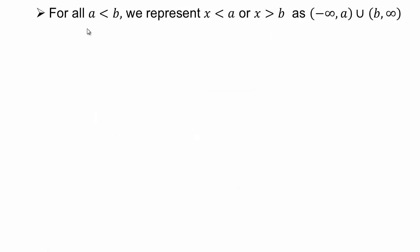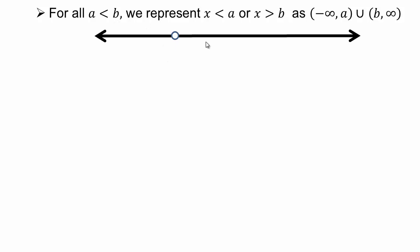For x less than a or x greater than b, we write it as negative infinity to a, union, b to infinity. The union symbol represents 'or' — meaning together, you can be either here or there. So everything to the left of a and everything to the right of b is included. For x less than or equal to a or x greater than or equal to b, a and b are now included, so we use square brackets at those endpoints.